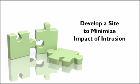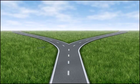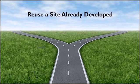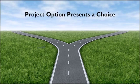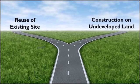First, develop a site to minimize the impact of intrusion. There are three potential solutions that relate to the site development required for a project. Leave the site alone as it currently relates to its original environmental condition — in other words, reuse a site that was already previously developed. Sites that are still natural green belts or landscaped are becoming scarce as the human population continues to expand and converts these sites to built environments. If the project presents a choice of reusing an existing site versus constructing on undeveloped land, consider carefully the use of the previously developed site.